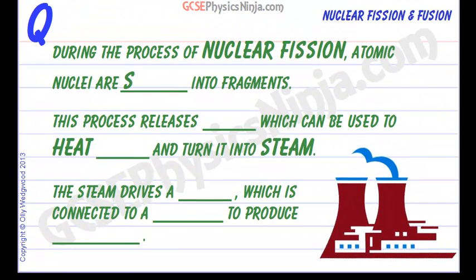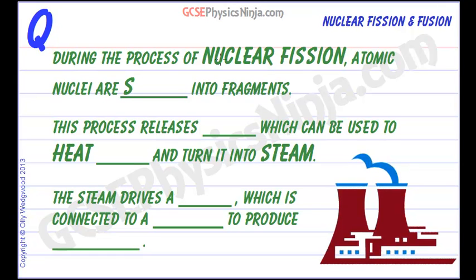Let's take a look at this flashcard. During the process of nuclear fission, atomic nuclei are split into fragments. This process releases energy which can be used to heat water and turn it into steam.